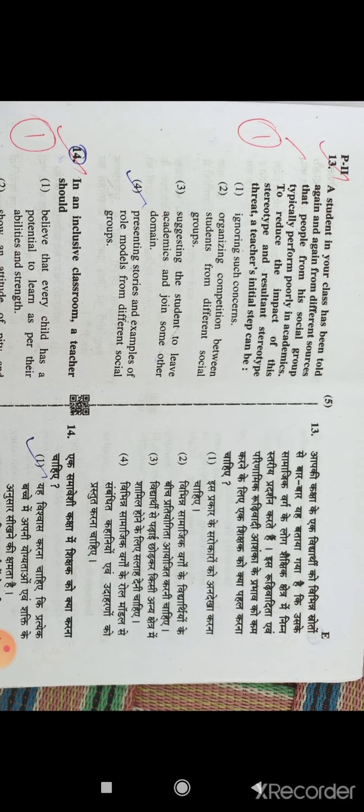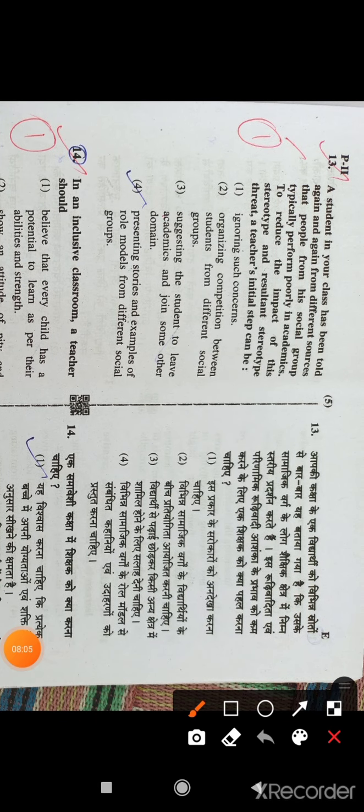Question number 13: A student in your class has been told again and again from different sources that people from his social group typically perform poorly in academics. To reduce the impact of this stereotype and resultant stereotype threat, a teacher's initial step can be...